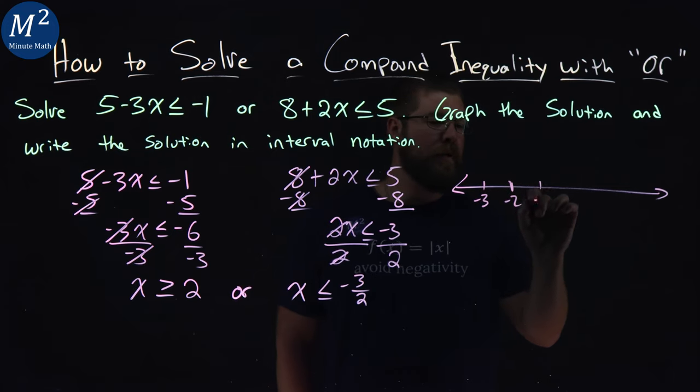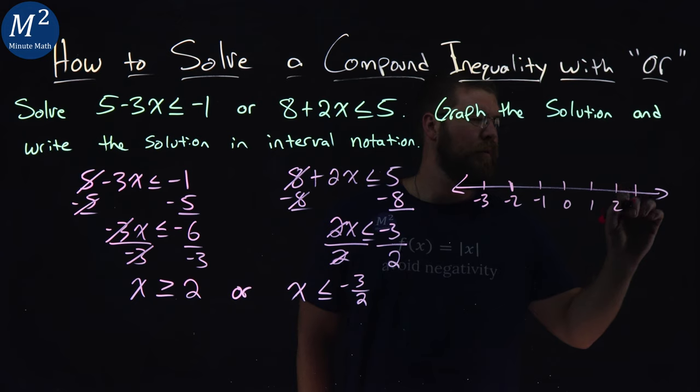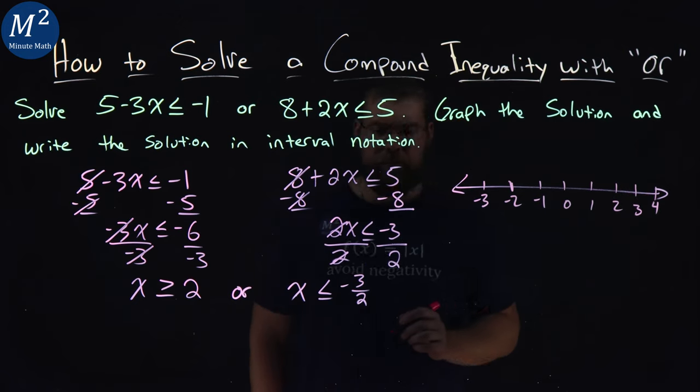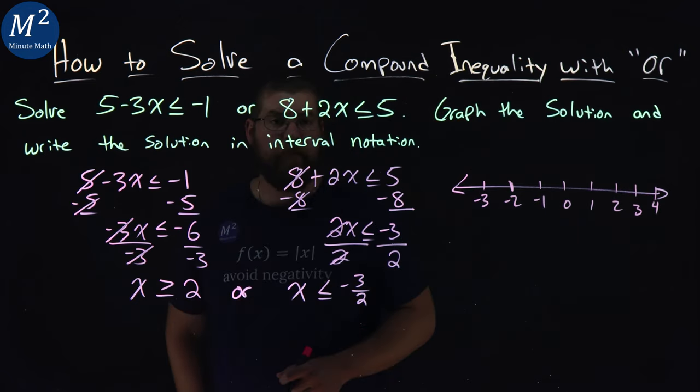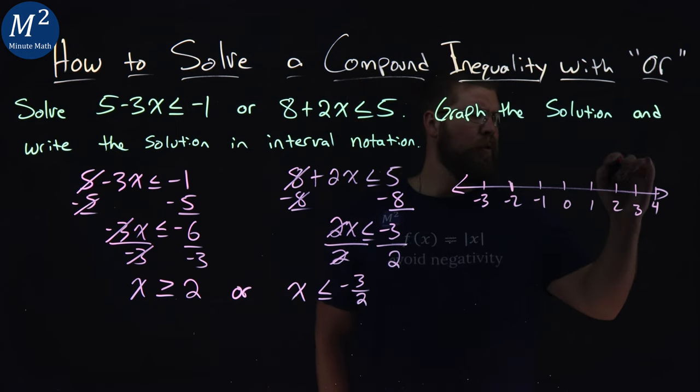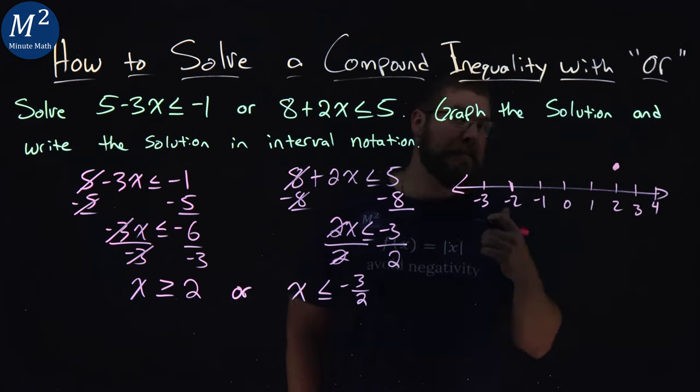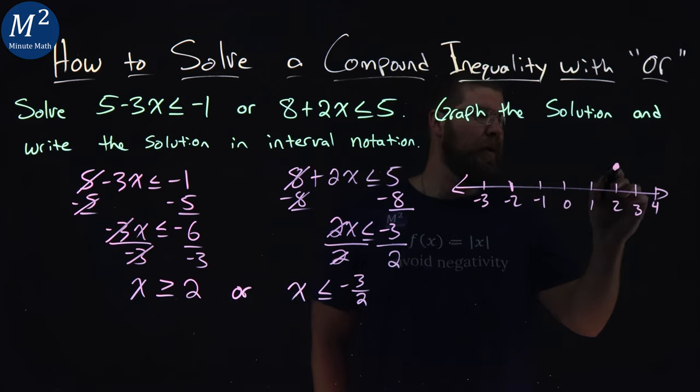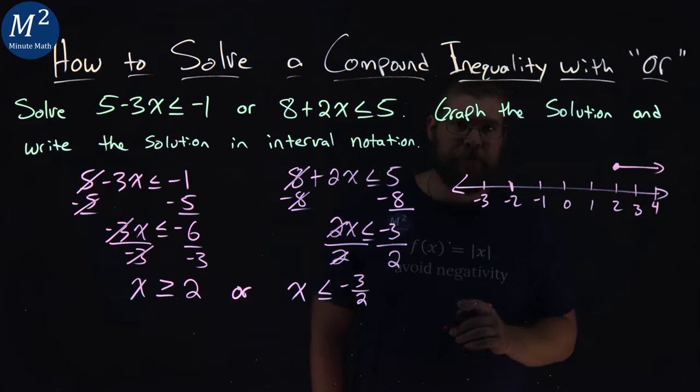Negative 2, negative 1, 0, 1, 2, 3, and 4. Let's start with the first one here. x is greater than or equal to 2. Since it's equal to 2, we have a closed circle there at 2, and since x is greater than 2, we put an arrow to the right where it's greater.